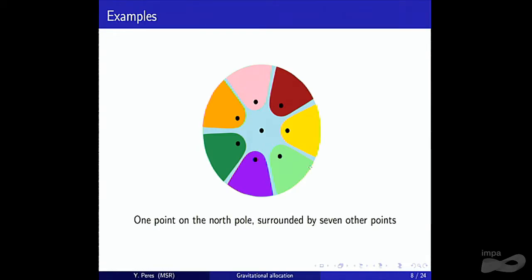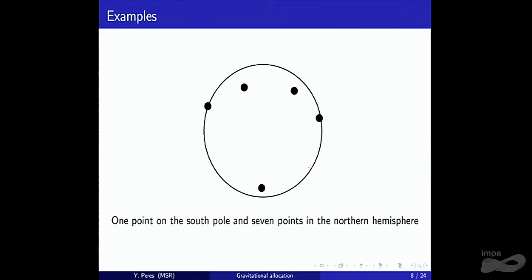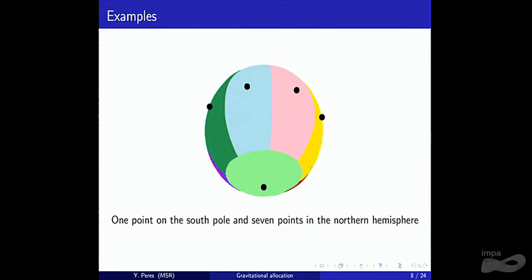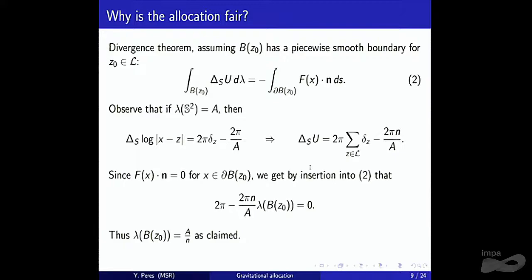He then asked: what if one star is in the south pole and all the rest are in the northern hemisphere — surely that one gets a bigger portion? It doesn't. Even points closer to the south pole get attracted north because the northern stars gang up and pull them. This works specifically because of the proper two-dimensional potential on the sphere. Here is the proof by formulas — just advanced calculus and the divergence theorem.